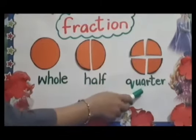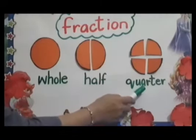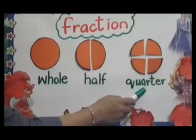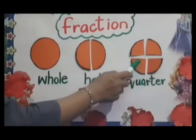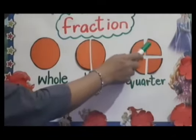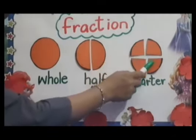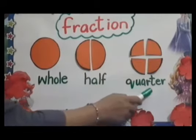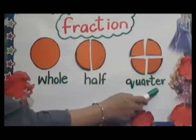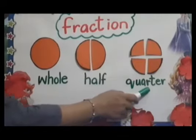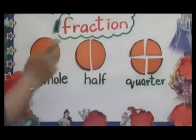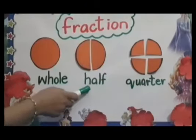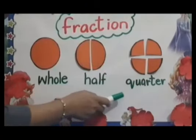Now look here and think about it. What is this? Yes, this is divided into four parts: one, two, three, four. It's called quarter. Whole, half, quarter.